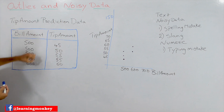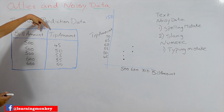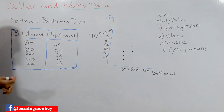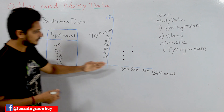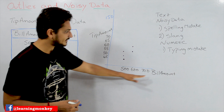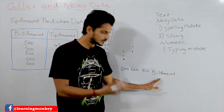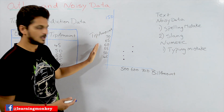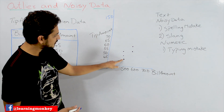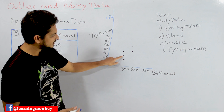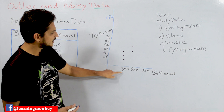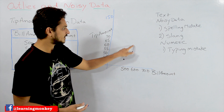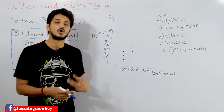So how do we plot this dataset? We take a two-dimensional coordinate system where the X axis shows the bill amount and the Y axis shows the tip amount. At 500, one customer gave a tip amount of 45, another gave 50, someone gave 55 at 600, and so on. That's how we plot the data.